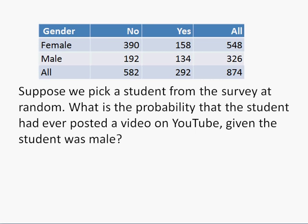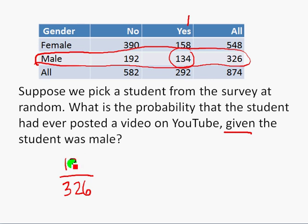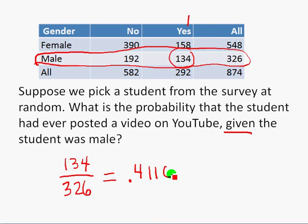Let's reverse things. We pick a student at random and find the probability the student had posted a video on YouTube, given that the student was male. We restrict our interest only to the males in this survey — that row has 326 students, so that's our denominator. Out of those 326, we find those who posted a video on YouTube — the yes column — which was 134. So the probability that a student had posted on YouTube given the student was male is 134 out of 326, or as a decimal 0.4110.